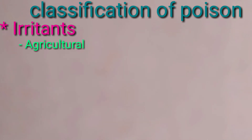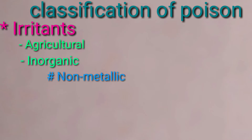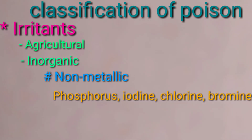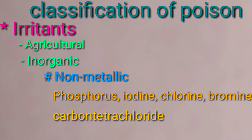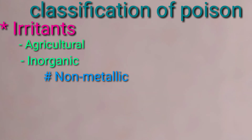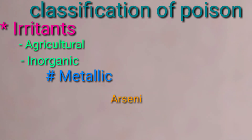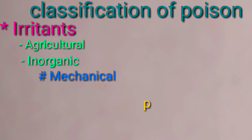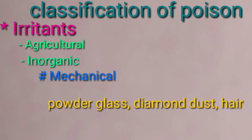Now, irritant poisons. Inorganic non-metallic: phosphorus, iodine, chlorine, bromine, and carbon tetrachloride. Metallic: arsenic, copper, lead, mercury, silver, zinc, and antimony. Mechanical: powdered glass, diamond dust, and hair.